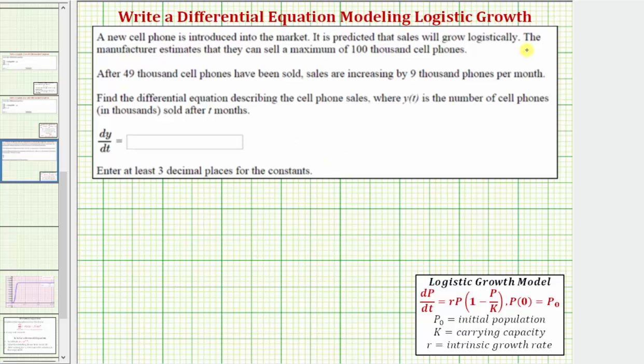Because we have logistic growth, we can write the differential equation in this form here, where the form is dp dt equals r times p times the quantity one minus p divided by k. Notice this is dp dt and we have dy dt. So to avoid any confusion, let's replace the p's with y's.